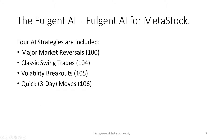We use the Fulgent AI engine that sits on the Metastock platform. We've got four artificial intelligence trading strategies that we use: major market reversals, classic swing trades, volatility breakouts, and quick three-day moves. All four of these cater for different trading styles, whether you're a position trader or a swing trader — there's something for everyone.